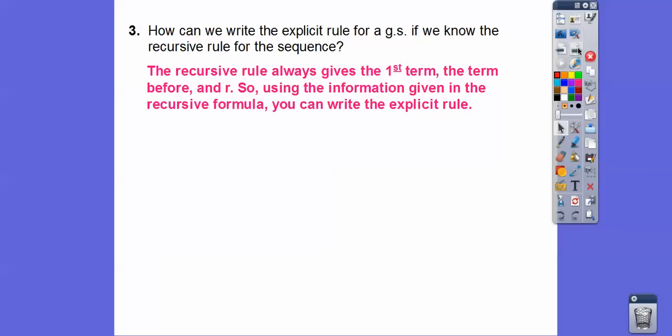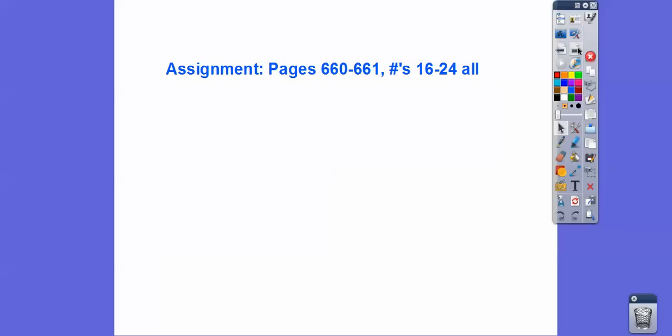how can we write the explicit rule for a geometric sequence if we knew the recursive rule for the sequence? Well, the recursive rule always gives the first term, and it gives the term before it. Remember, it was f of one equals something, then it said f of n equals f of n minus one times r. And then it said for something like n is greater than or equal to two. So they give you everything. So if they give you the first term, then we just use that information and r, and then we can write the explicit rule.